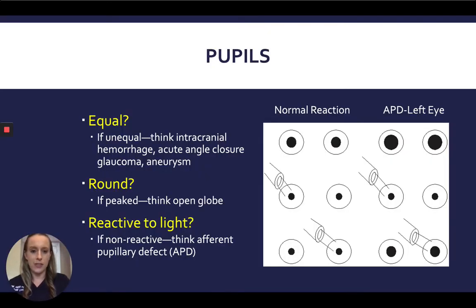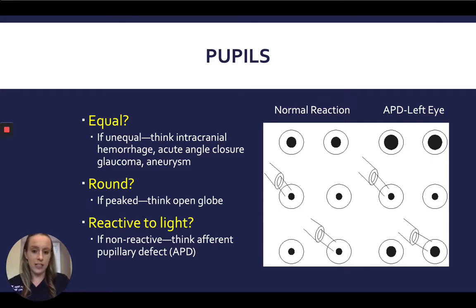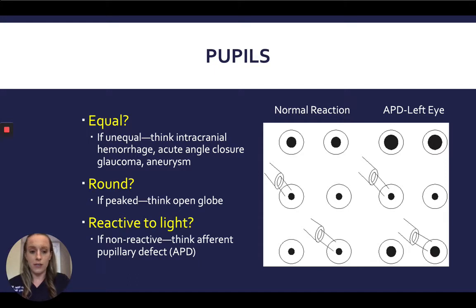Starting with pupils, the first thing you want to check is whether the patient's pupils are equal. If they're unequal, your differential diagnosis should include intracranial hemorrhage, acute angle closure glaucoma, or aneurysm. You also want to check the shape of the pupils — are they round, or irregular and peaked? If they're irregular and peaked, you'll want to consider an open globe on your differential.